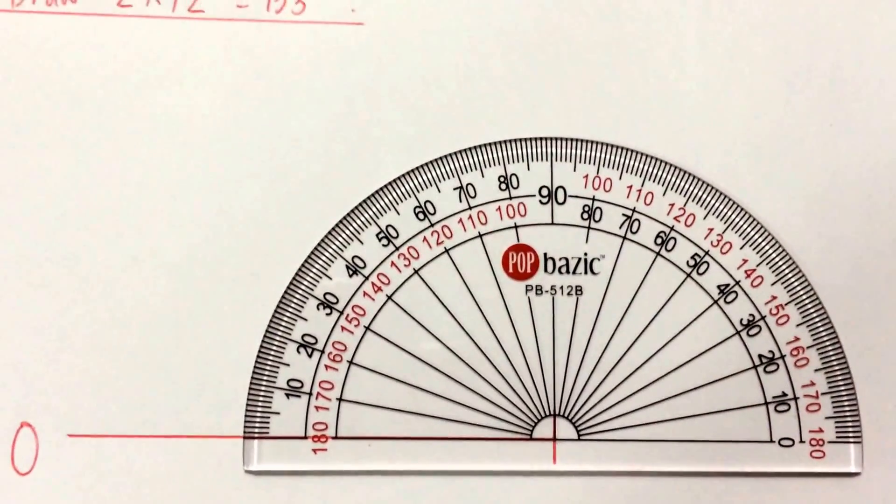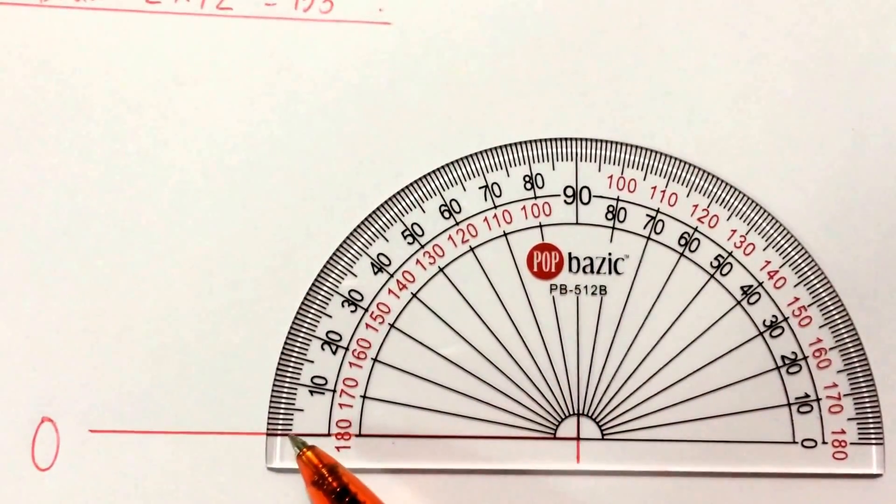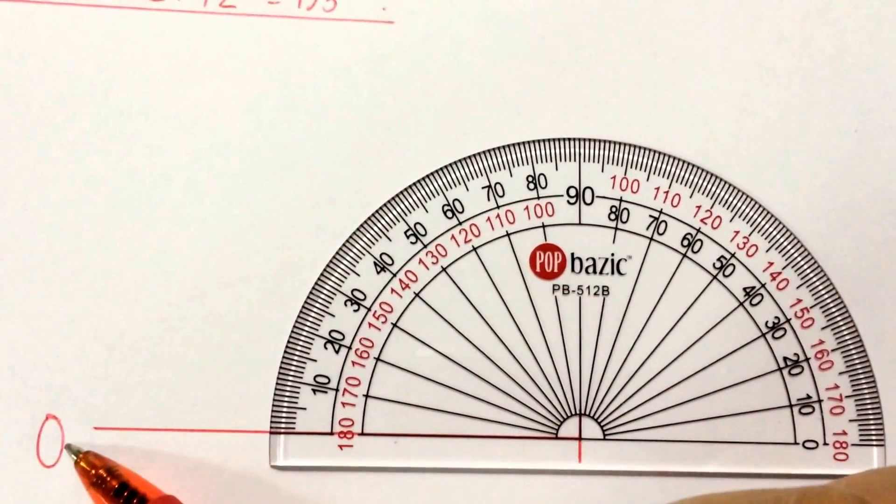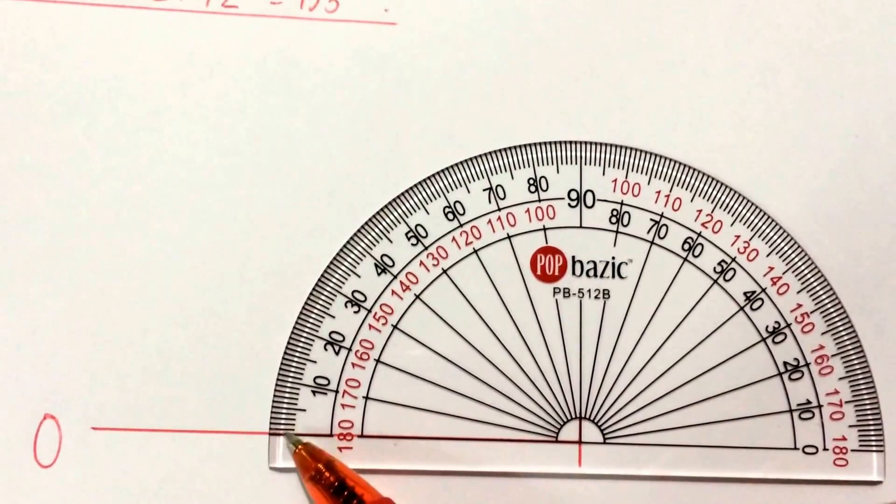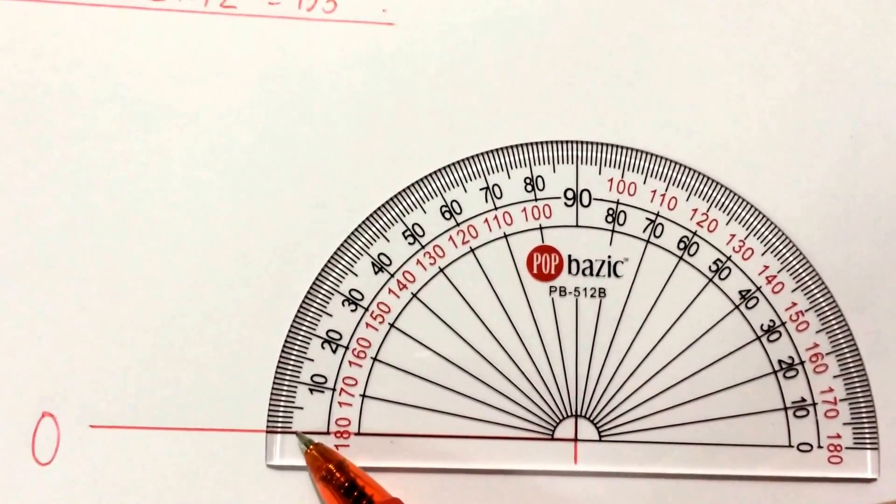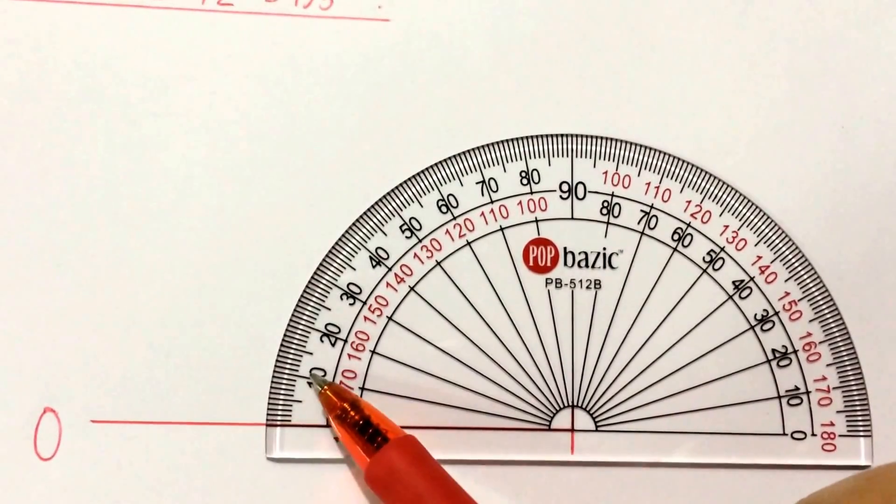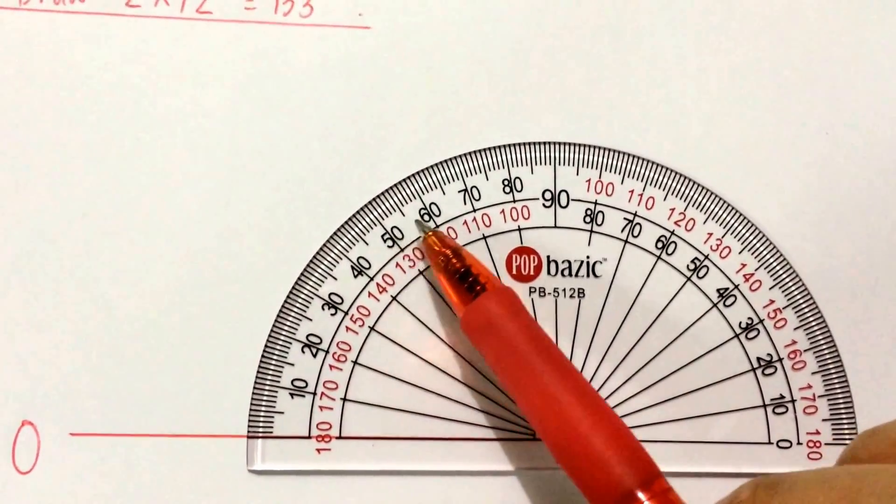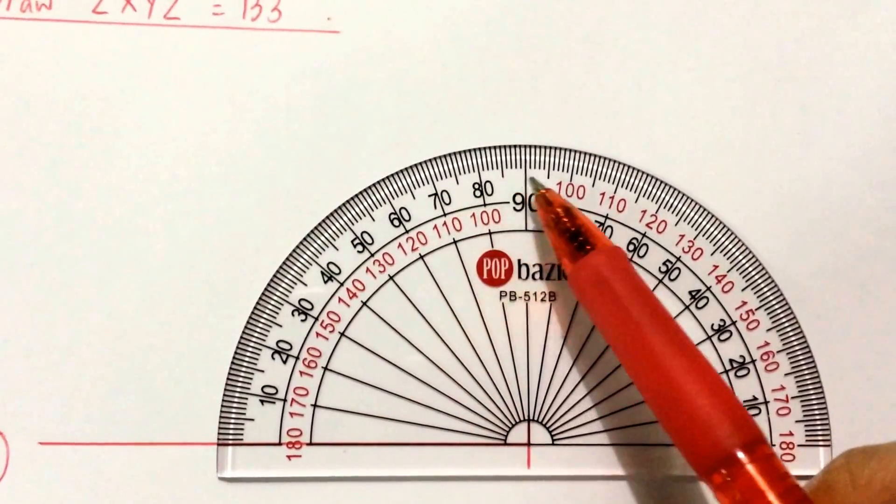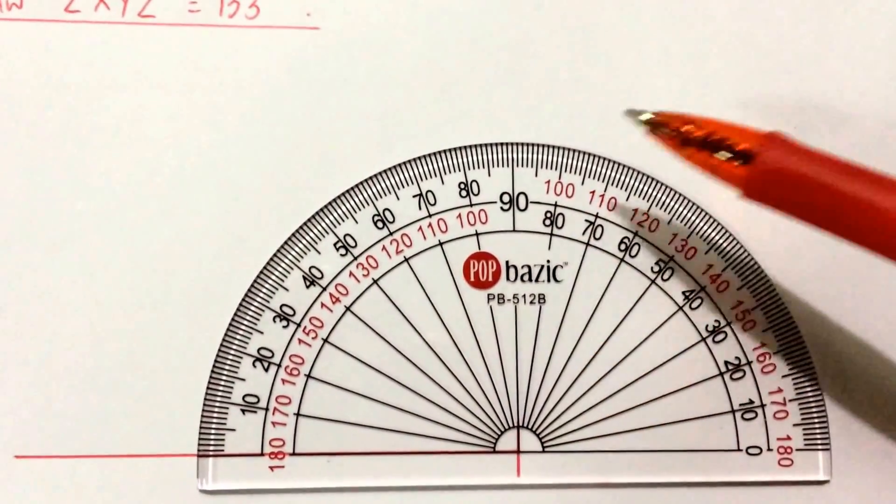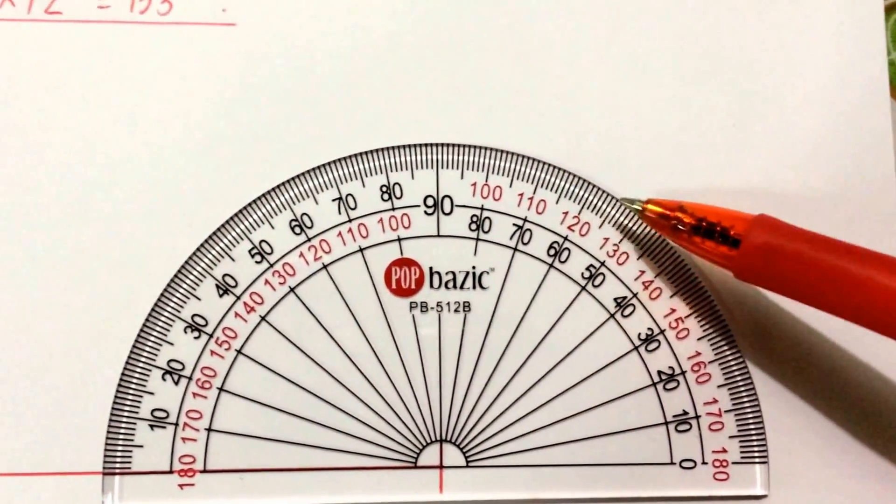Okay now 133. I will start counting from here because this is zero, and since this is zero I start from the outer scale: zero, 10, 20, 30, 40, 50, 60, 70, 80, 90, 100, 110, 120, 130.